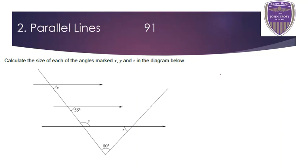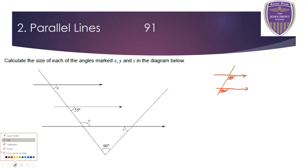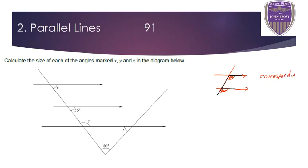Number two is about parallel lines. There are three rules for parallel lines — parallel lines never touch. As soon as we create a line that goes through them, we create a number of angles at those points. The first rule is that these two angles here are the same — they're in the same position just below the parallel line. If you join up those lines you've made the letter F. We sometimes call them F angles, but the correct math terminology is that they are corresponding angles and they are equal in size.